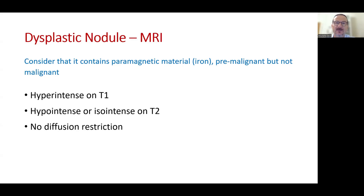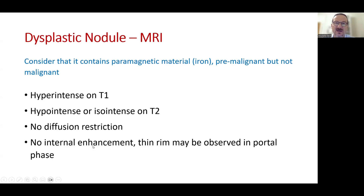During the evaluation of MRI, we should consider that dysplastic nodules contain paramagnetic material, particularly iron. It is a premalignant condition, but it is not a malignant tumor. The iron content makes the lesion hyper-intense on T1. It is hypo-intense or iso-intense on T2. It does not display diffusion restriction, and there is no internal enhancement. A thin rim enhancement may be observed during the portal phase.